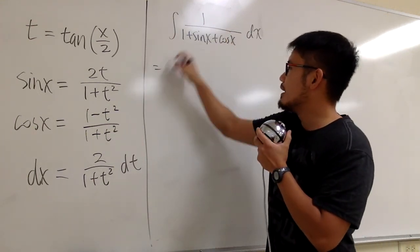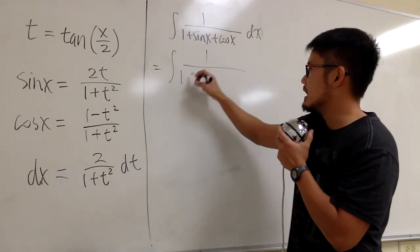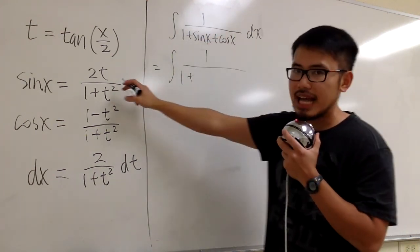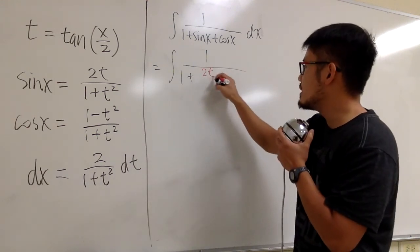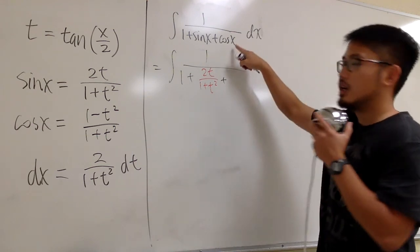So here we have integral 1 on the top over 1 plus sin x, right? So let's write down 2t over 1 plus t squared, and then we add it with cos x,